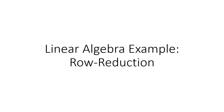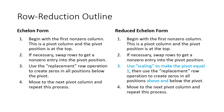In this video, I'm going to talk through the process of row reducing a matrix, both to echelon form and also to reduced echelon form. We've talked about these outlines in the lecture on row reduction — that's lecture 4 in my linear algebra lecture series — and the processes for echelon form and reduced echelon form are very similar with just a couple of slight differences.